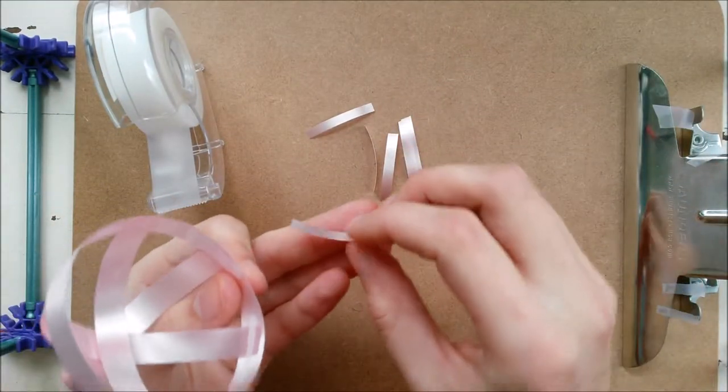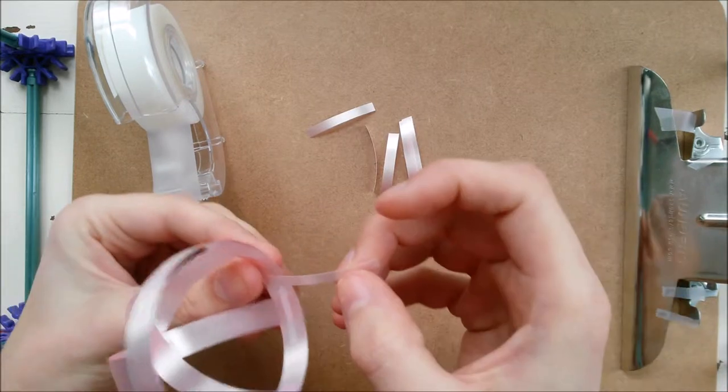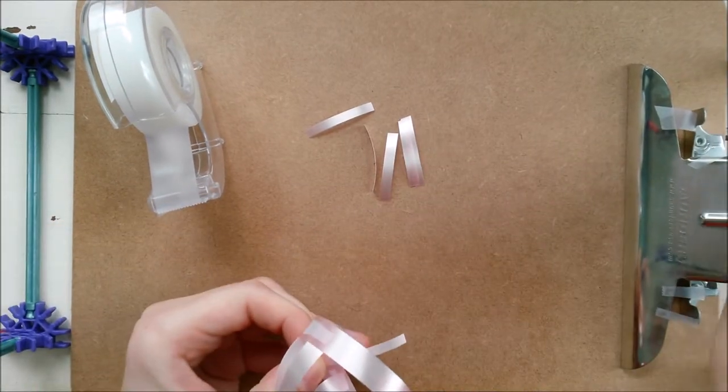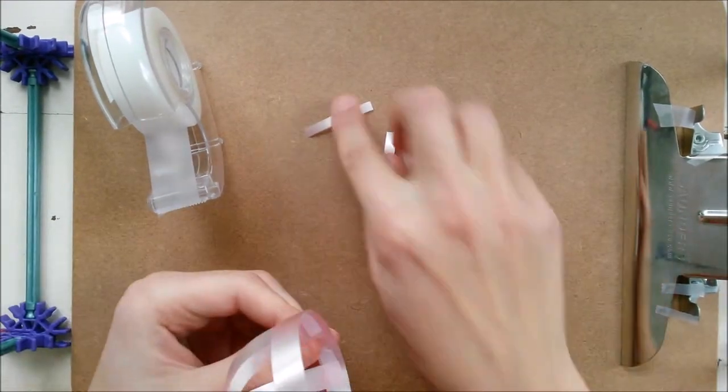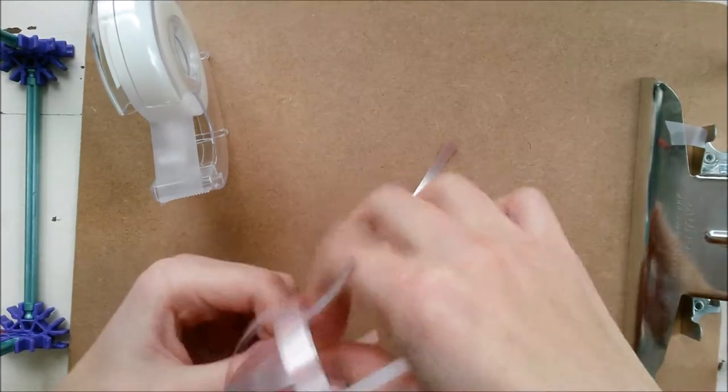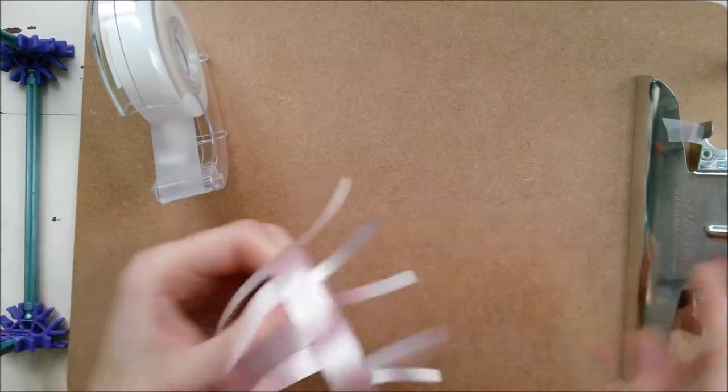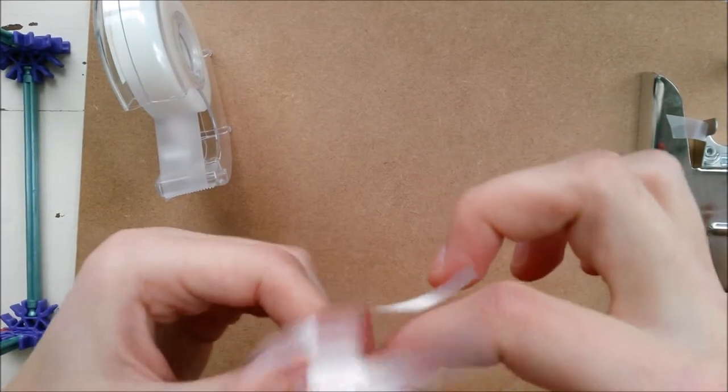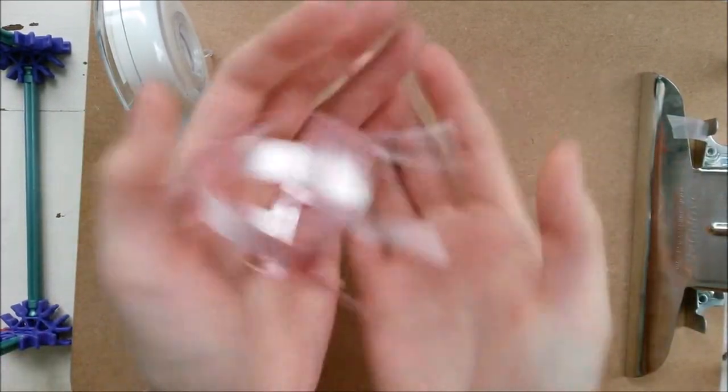So because the ribbon was curved already, it already has that shape so that's really handy. So we just tape them in there. Really press these tapes down firmly when you do it to make sure it's not just going to fall off at some point. There we go.